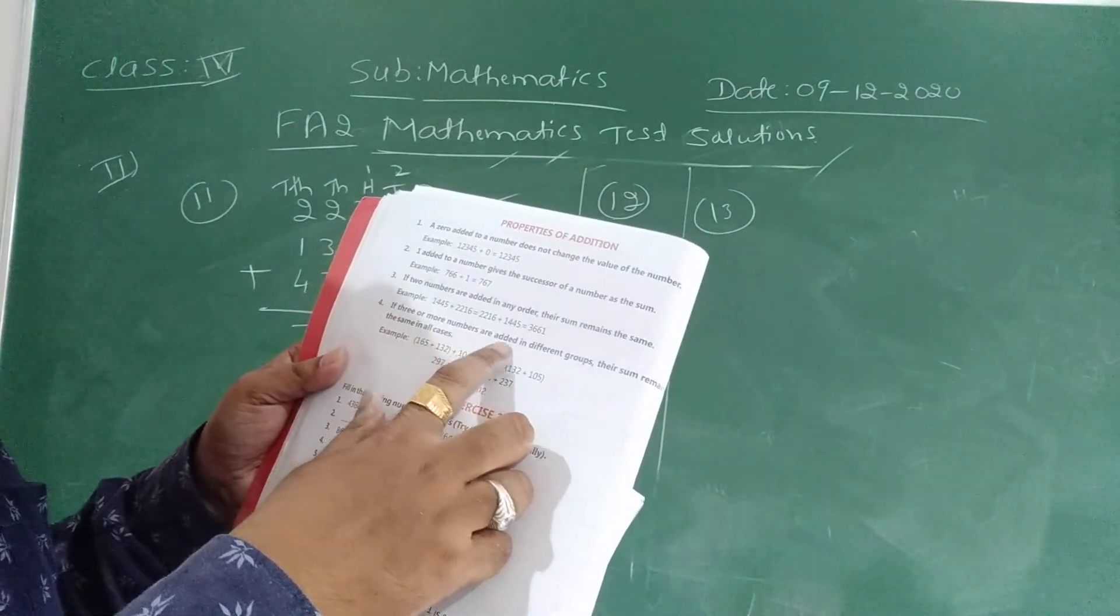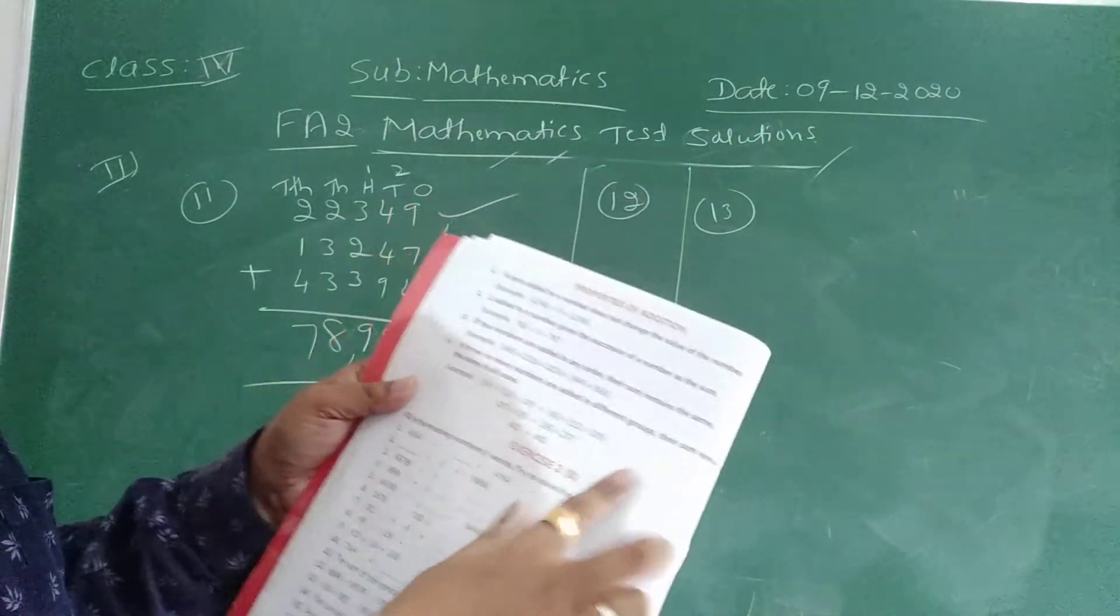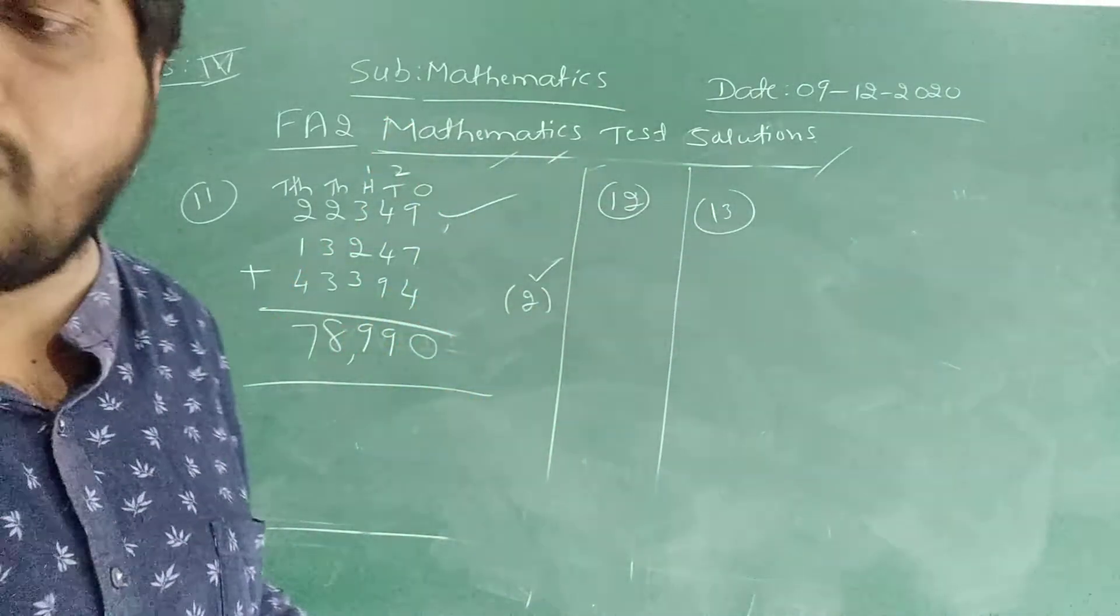Fourth one, if 3 or more numbers are added in different groups their sum remains the same in all the cases. It is there in page number 32, just you have to copy.